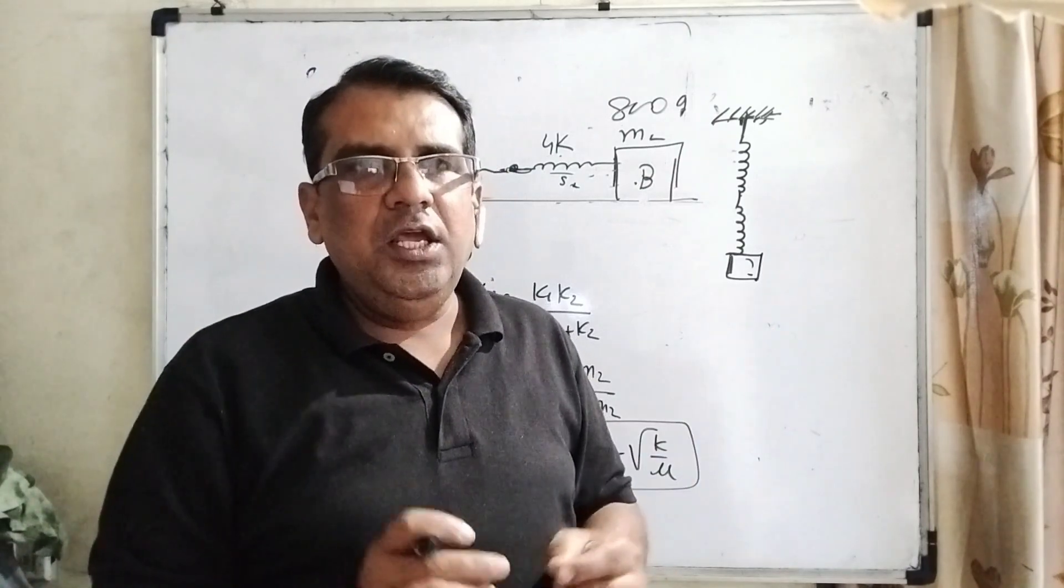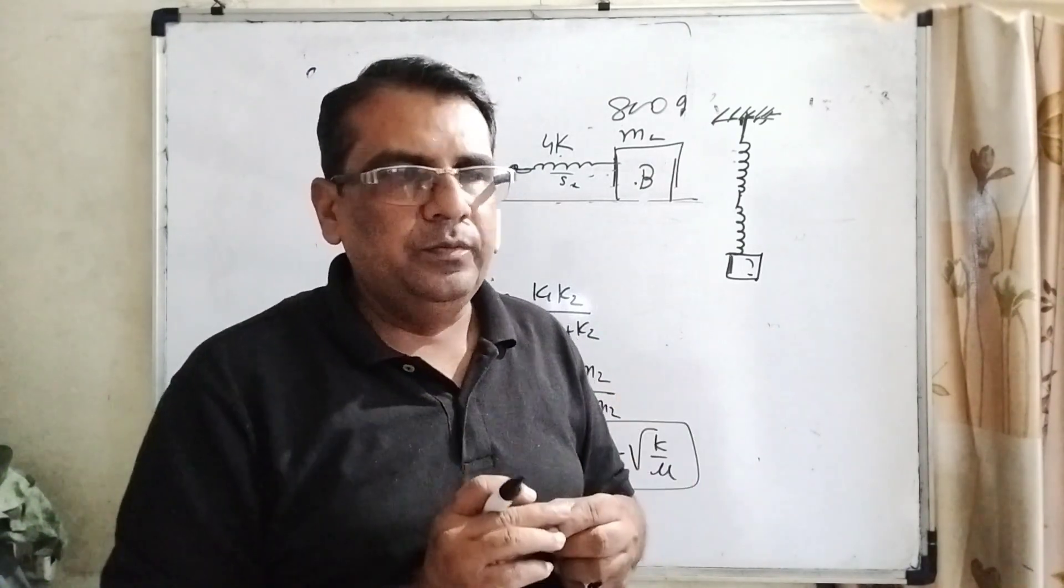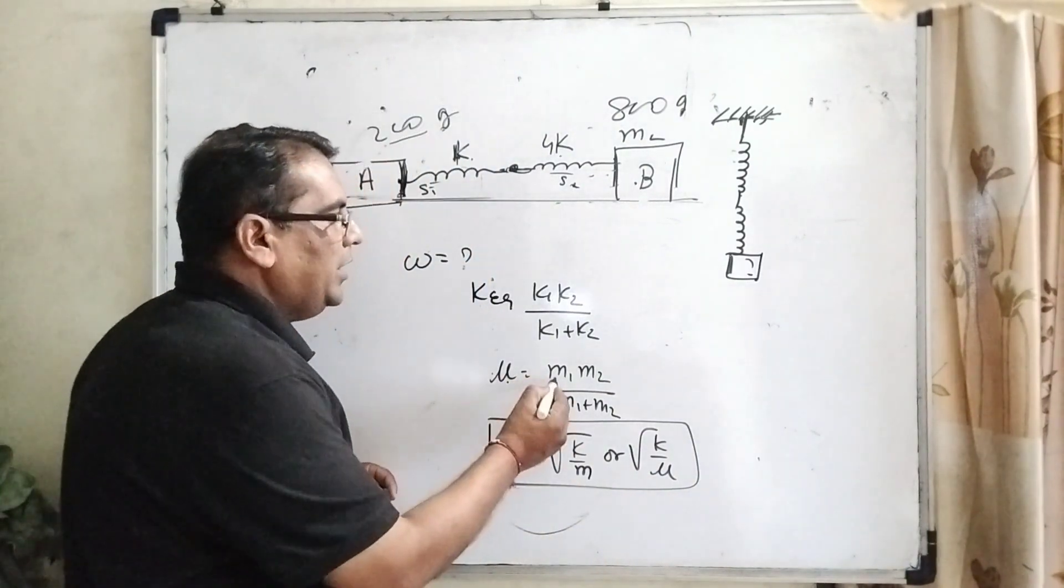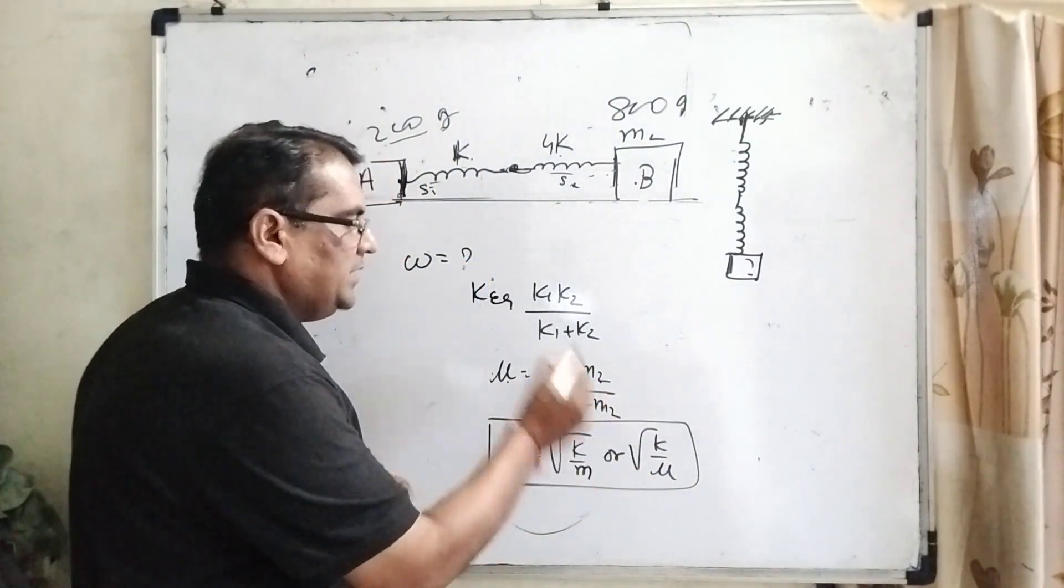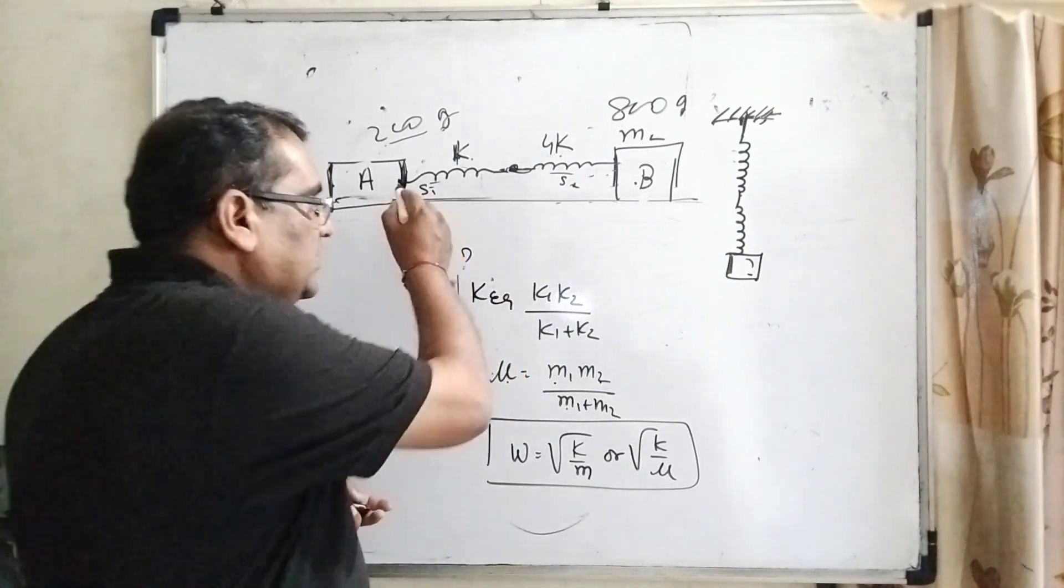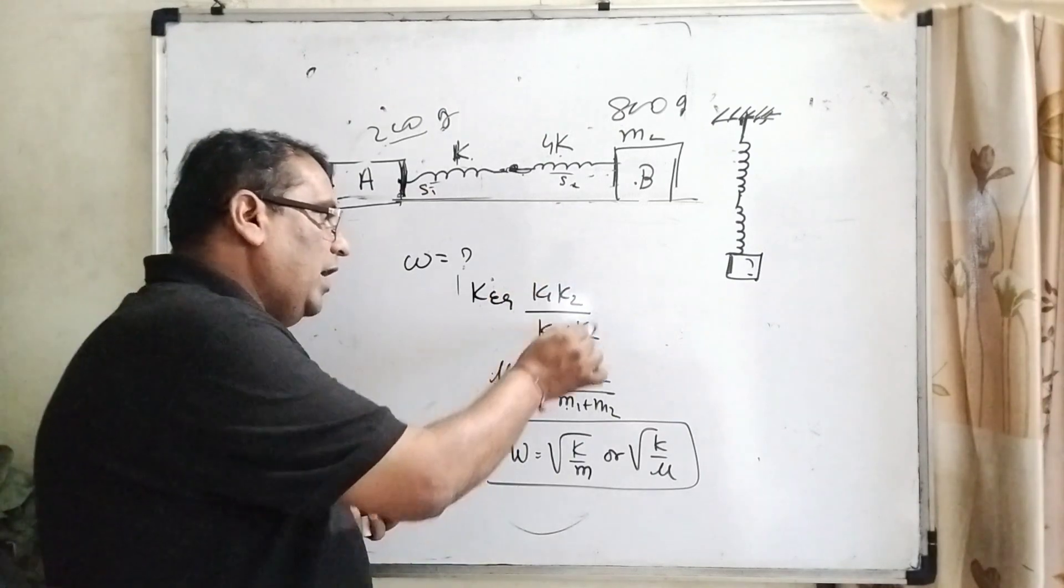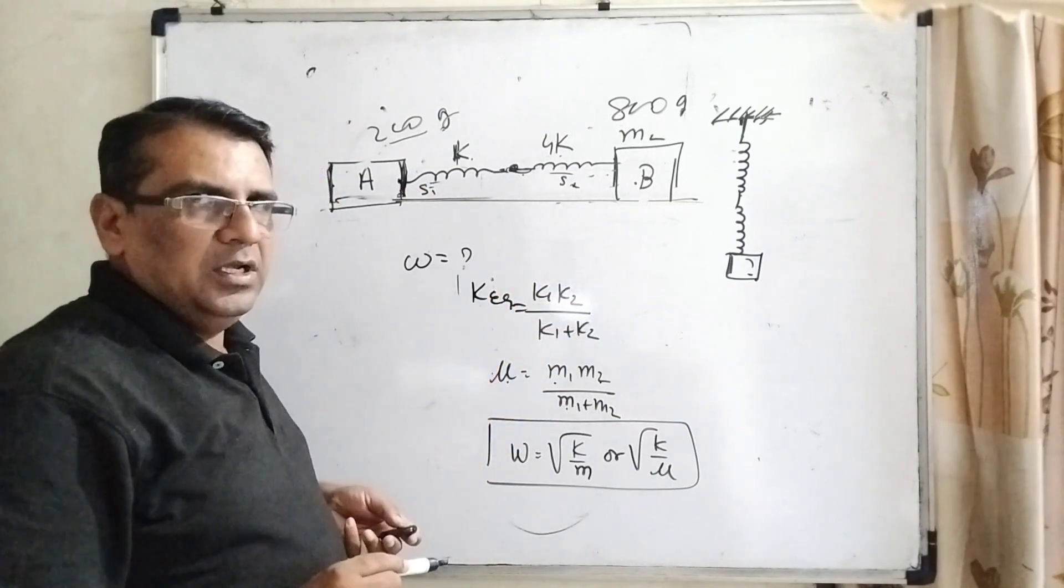In this case, equivalent mass is reduced, which we consider as mu, and mu can be found as m1 m2 upon m1 plus m2. And equivalent spring constant, because it is in series, we use this formula. Is that clear?